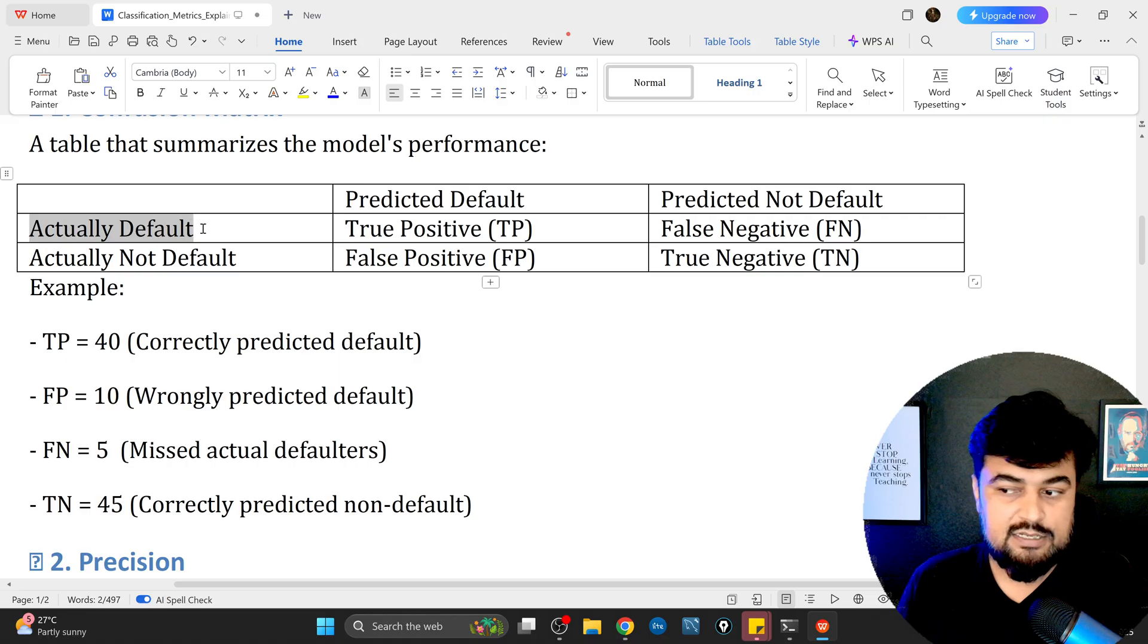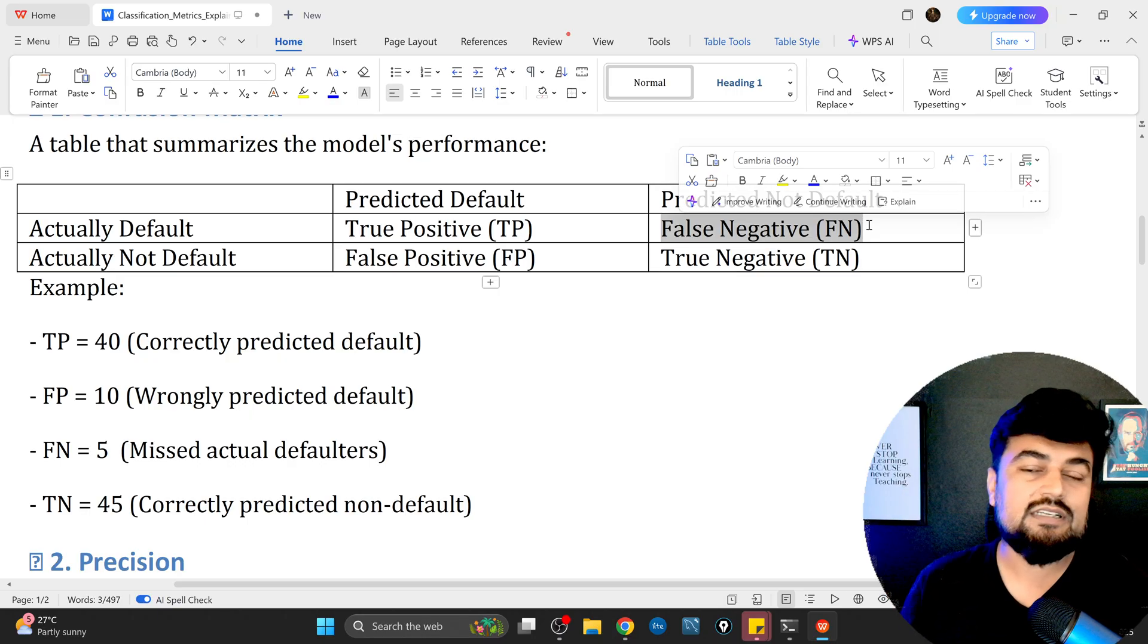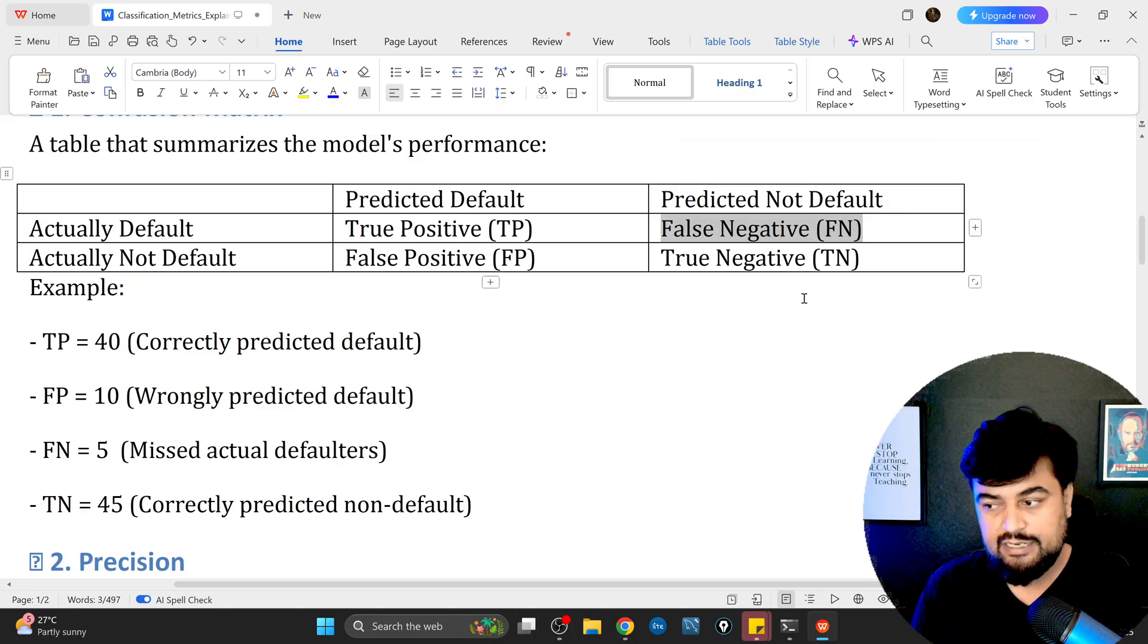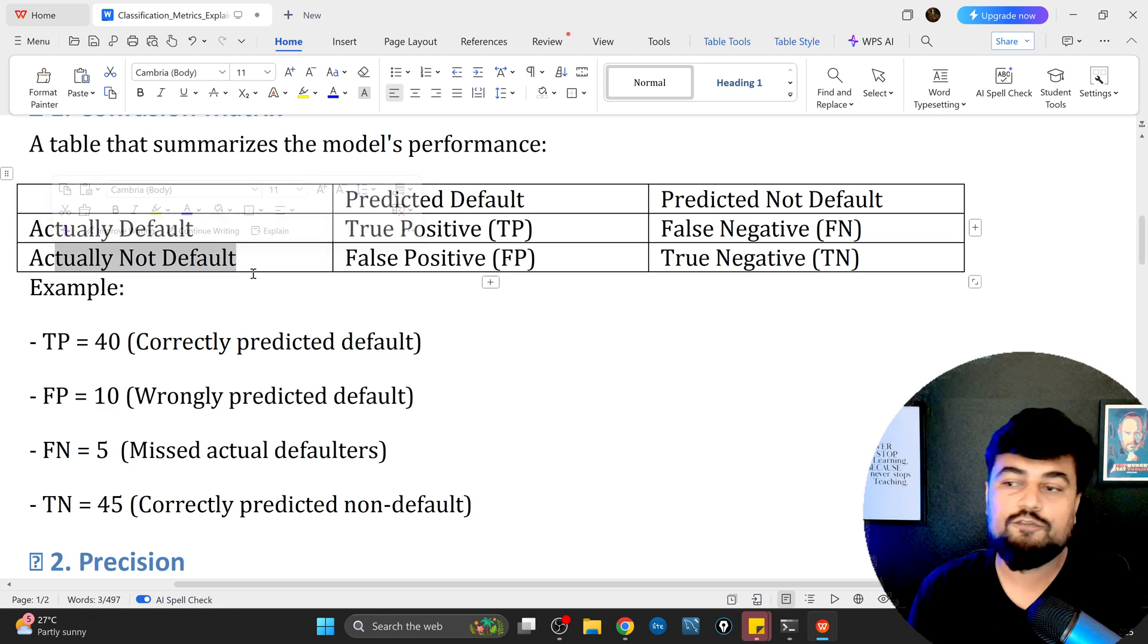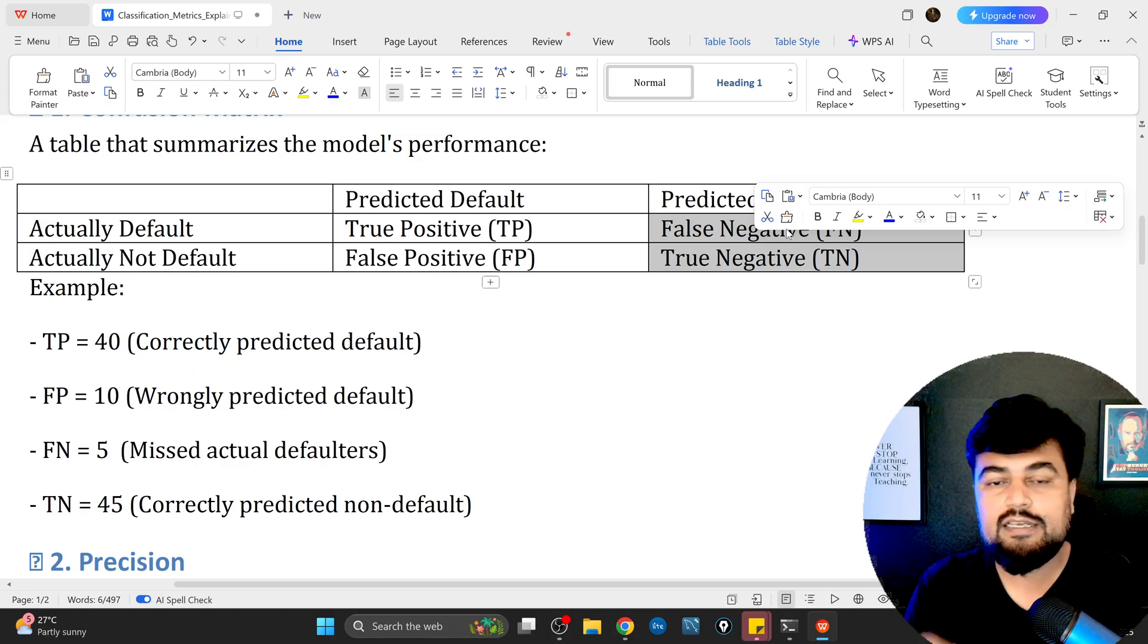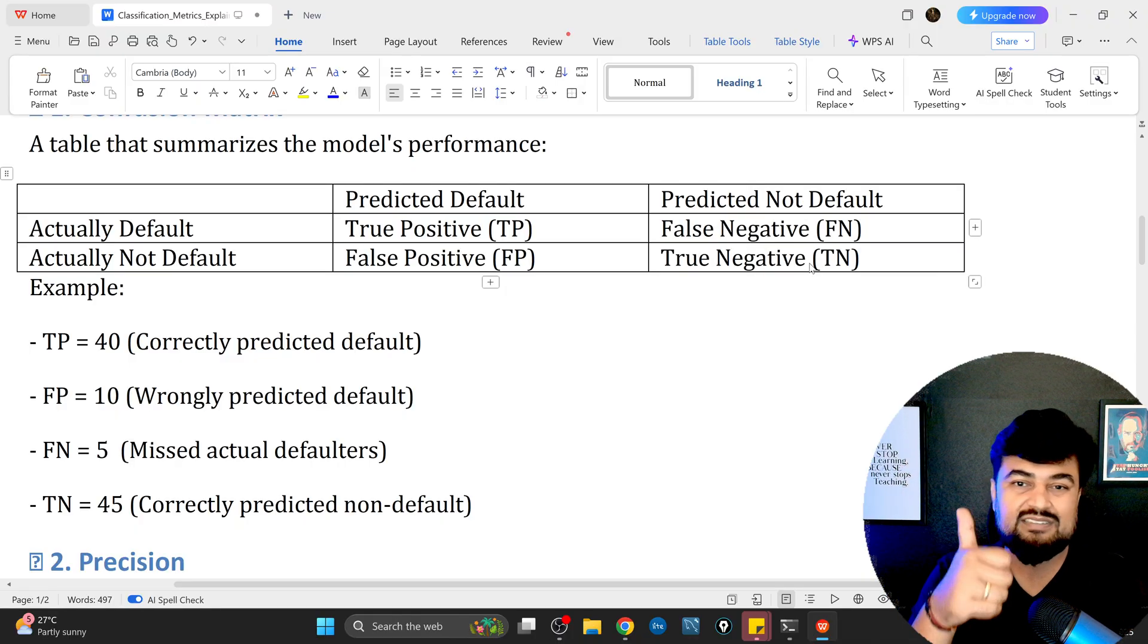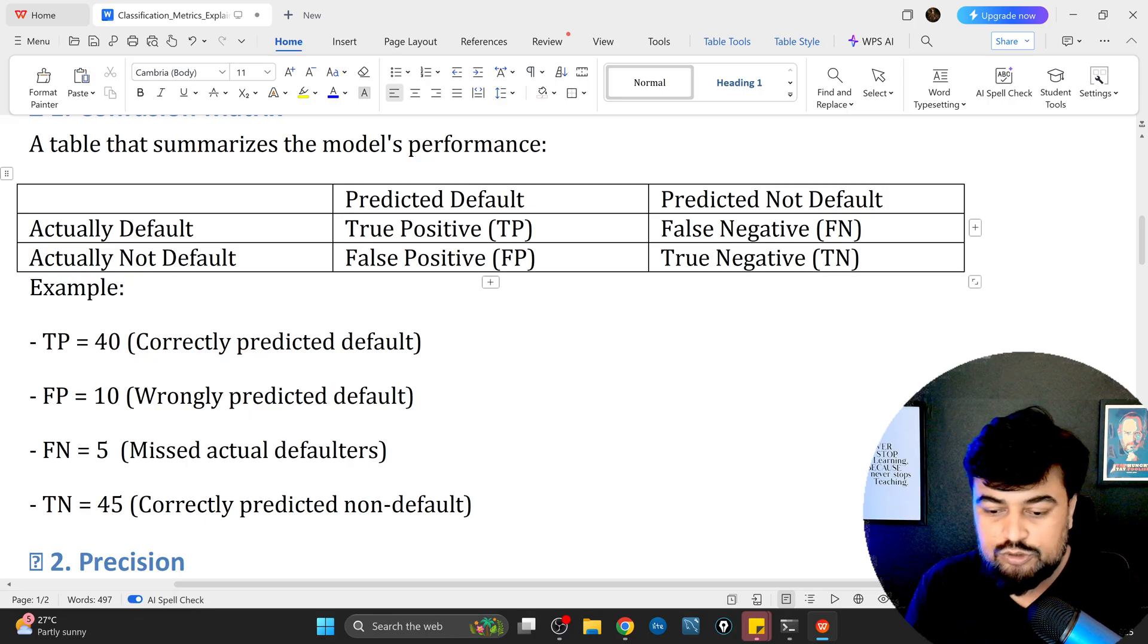Some person actually defaulted but the predicted value said it was non-default. That is false negative. False positive is when the actual value says this person is non-default but you are predicting it's a default. True negative is when both values are saying this person is non-default. So the concept of true positive and true negative is just opposite, 180 degrees.